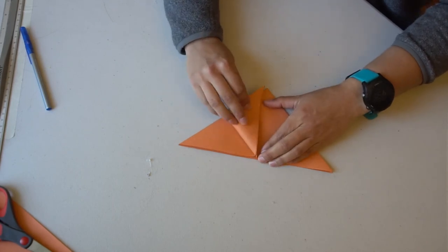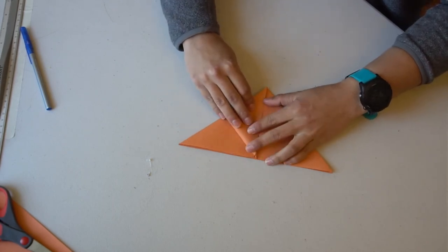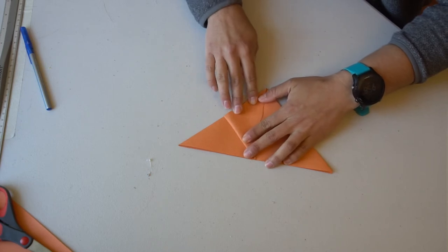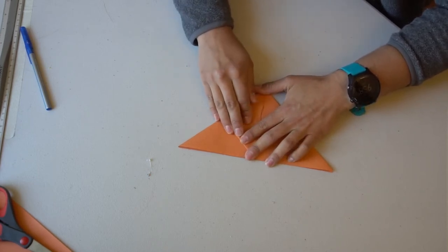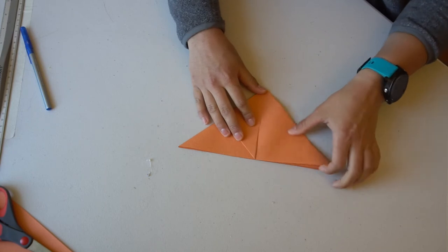After that, take the top half of the lower points of the triangle and fold them up to touch the top point of the triangle. This will make a diamond in the center of your triangle.